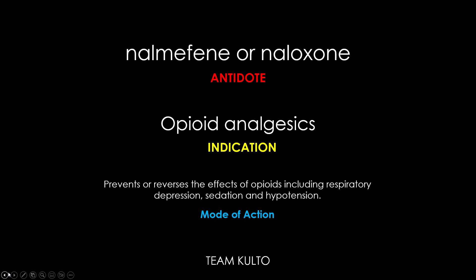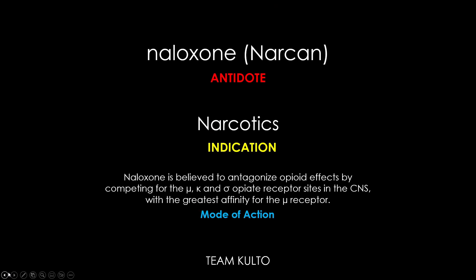Next, we have Naloxone — brand name Narcan — which is indicated for narcotic intoxication. Its mode of action is that Naloxone is believed to antagonize opioid effects by competing for the opioid receptor sites in the CNS, with the greatest affinity for the mu receptor. Good examples of narcotics are morphine, pethidine, and tramadol. You should always have Naloxone available whenever these medications are in use, because you never know when a toxic level will be reached.